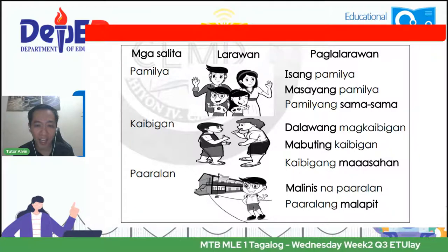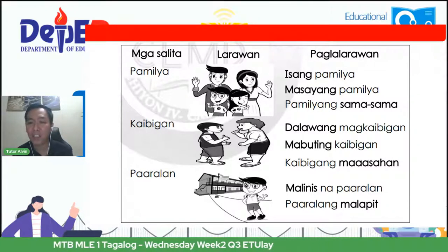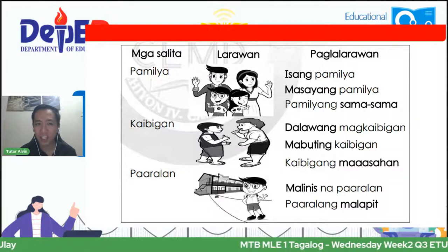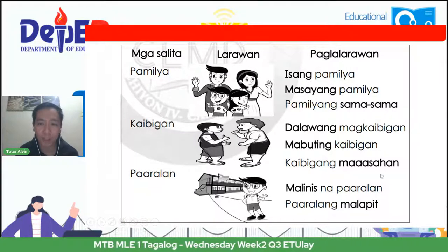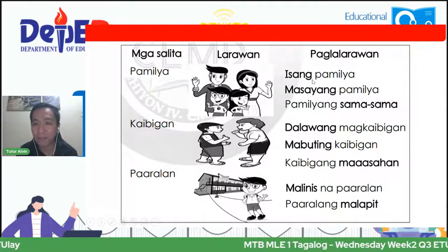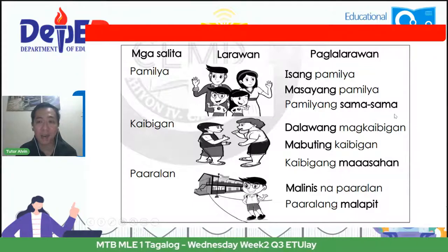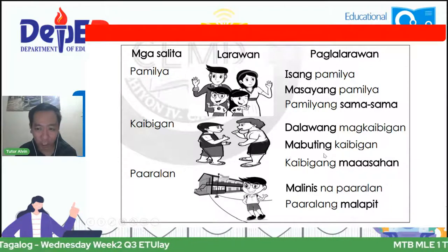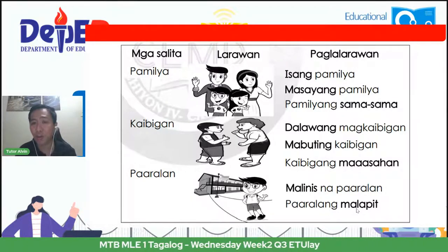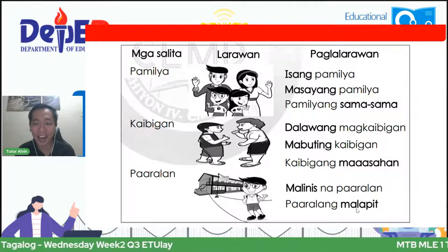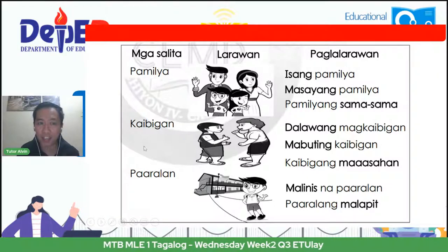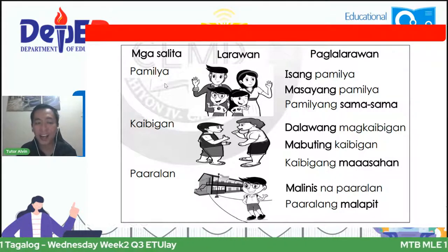At ang susunod, paaralan. Sabi rito, malinis na paaralan. Pwede rin paaralan malapit. Ano ang napansin ninyo sa bahaging ito sa paglalarawan? May mga nakaitim na sulat ang mga salitang isang, masayang, sama-sama, dalawang, mabuting, maaasahan, malinis, at malapit. Ang ibig sabihin nito, ito ay mga salitang naglalarawan. Ano ang nilalarawan? Ang mga salitang pamilya, kaibigan, at paaralan.